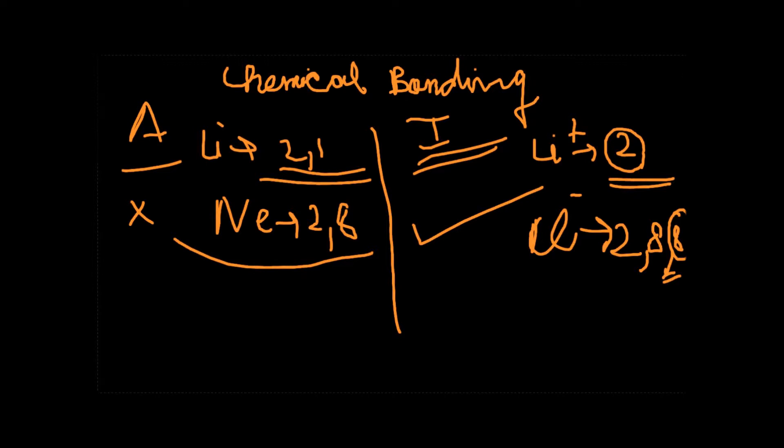Let's go through the types of bonds. In your syllabus, there are only three types of bonds: namely electrovalent or ionic, covalent, and coordinate bonds.